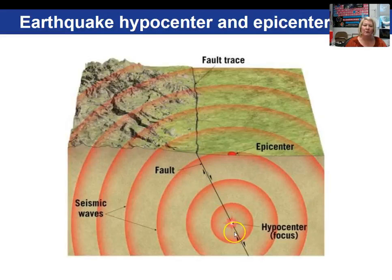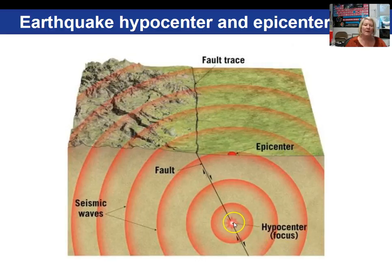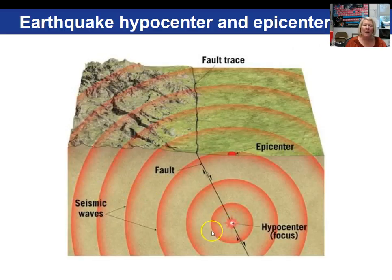Here's an image showing a fault running down with one block on each side. Movement has occurred on either side — in this case, movement on the right side of the fault has moved down and the block on the left side moves up. The place down within the earth where the rock originally breaks is called the focus or hypocenter. If we project that point directly up to the earth's surface, that's what we call our epicenter. These are the seismic waves emanating out, and all waves carry energy with them.